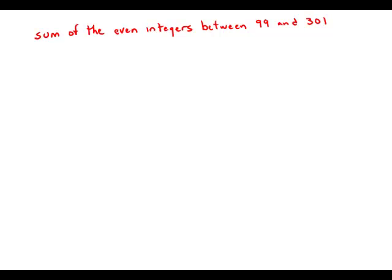If we were adding up all the integers from 99 to 301, then that formula might be useful. Instead, we're adding up the even integers, so that formula is useless.